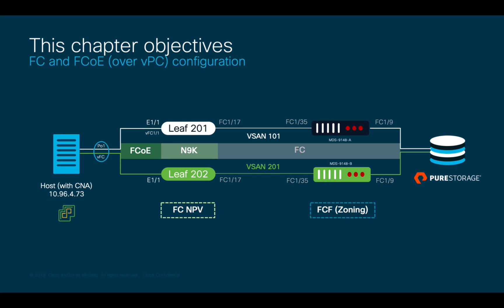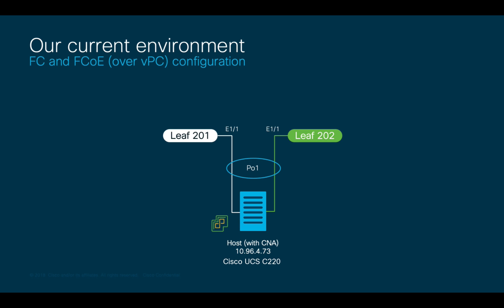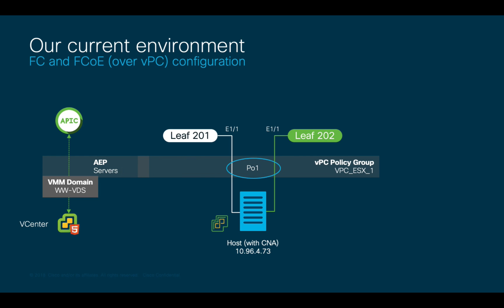Let's now move on and configure the Fiber Channel Over Ethernet physical network configuration for our VMware host. This one is a bit tricky, so I will try to be as detailed as possible. Our VMware server is a UCS C220 which is currently connected to the ACI fabric using a converged network adapter in virtual port channel, leveraging a vCenter VMM domain integration. Such VMM domain is associated to an AEP called 'servers',